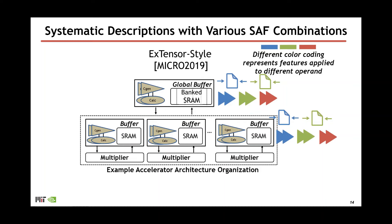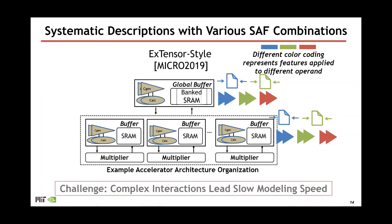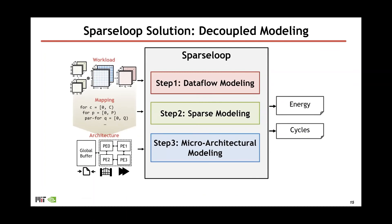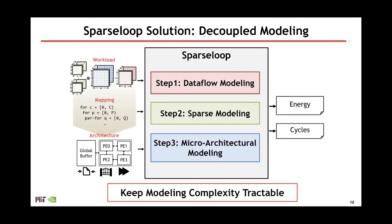As you can see, different sparse acceleration features can be implemented and combined in different ways. The next challenge is the complex interaction between different design aspects, which can lead to very slow modeling speed. In addition to sparse acceleration features, the simulation framework also needs to understand data transfer and underlying hardware design. To solve this, SparseSoup proposes a decoupled modeling process with three steps: dataflow modeling, sparse modeling, and microarchitecture modeling. Each step focuses on an orthogonal design aspect and is kept at tractable complexity, allowing SparseSoup to maintain reasonable modeling speed.